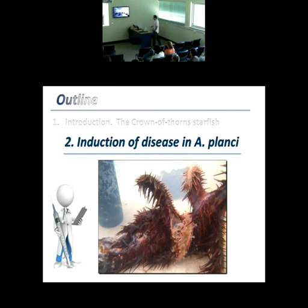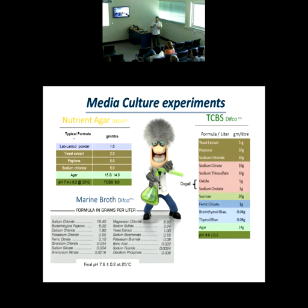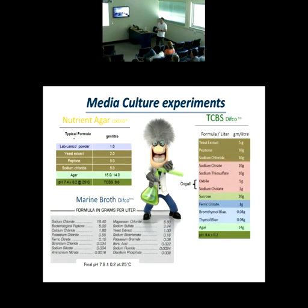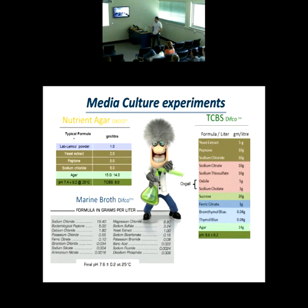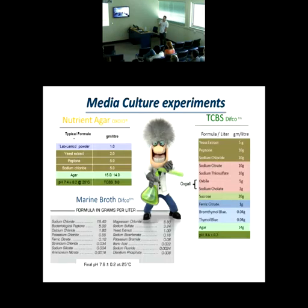Now I'm going to talk about the induction of disease in Crown of Thorns starfish. This is a starfish injected with TCBS after 18 hours. We started this research by using three different biocultures. We found that nutrient agar, TCBS, and marine broth share many different components — they all have yeast extract, peptone, and salt. But the main differences are oxgall, sodium citrate, and sodium thiosulfate.